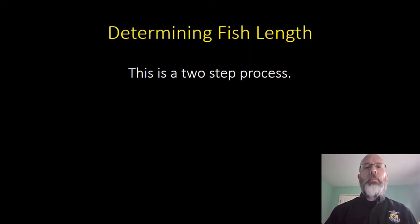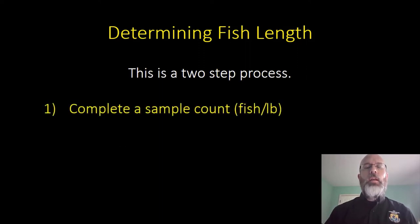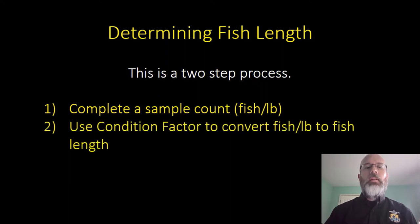This is a two-step process. Step one: you want to complete a sample count and calculate the number of fish per pound in the raceway. Second, you'll use something called condition factor to convert that fish per pound calculation to fish length, and we're going to walk you through this entire process.